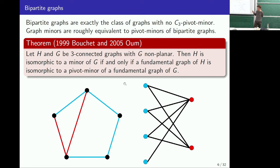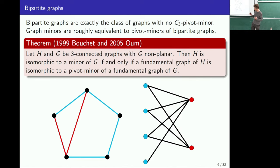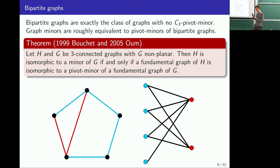Another natural class is bipartite graphs. These are also pivot minor closed, and actually these are exactly the graphs that contain no triangle as a pivot minor. One nice thing about these is that, very roughly speaking, pivot minors on bipartite graphs capture minors on graphs — a graph being a minor of another graph means its fundamental graph is a pivot minor of the other fundamental graph. So there's another back and forth between pivot minors and graph minors.